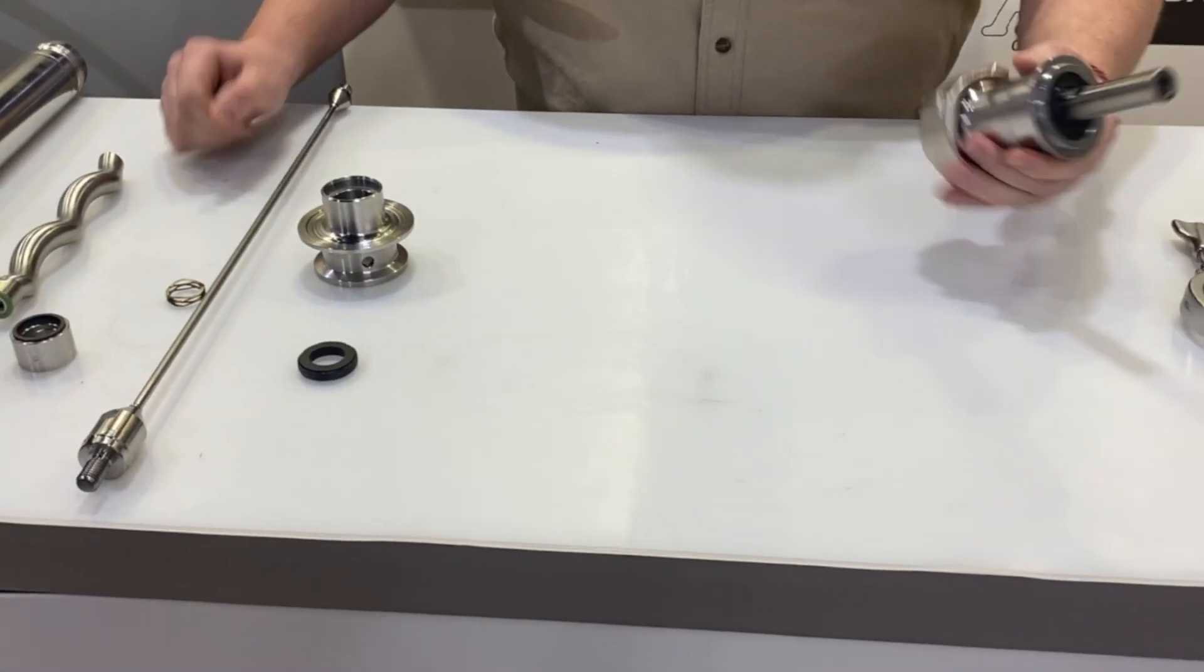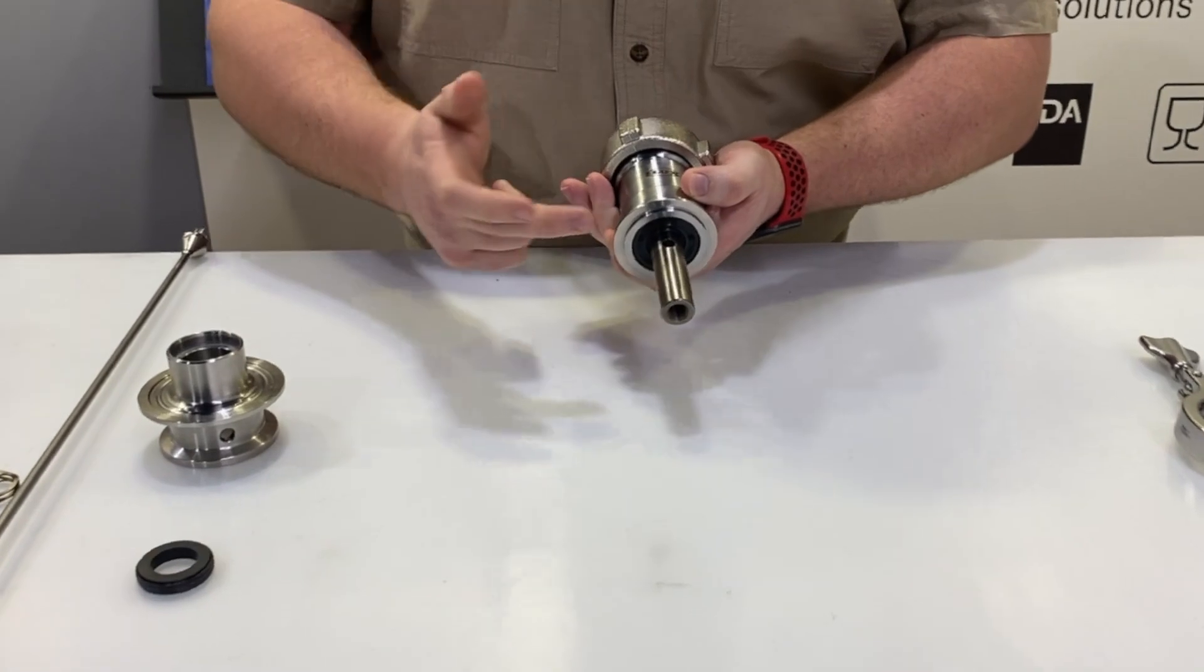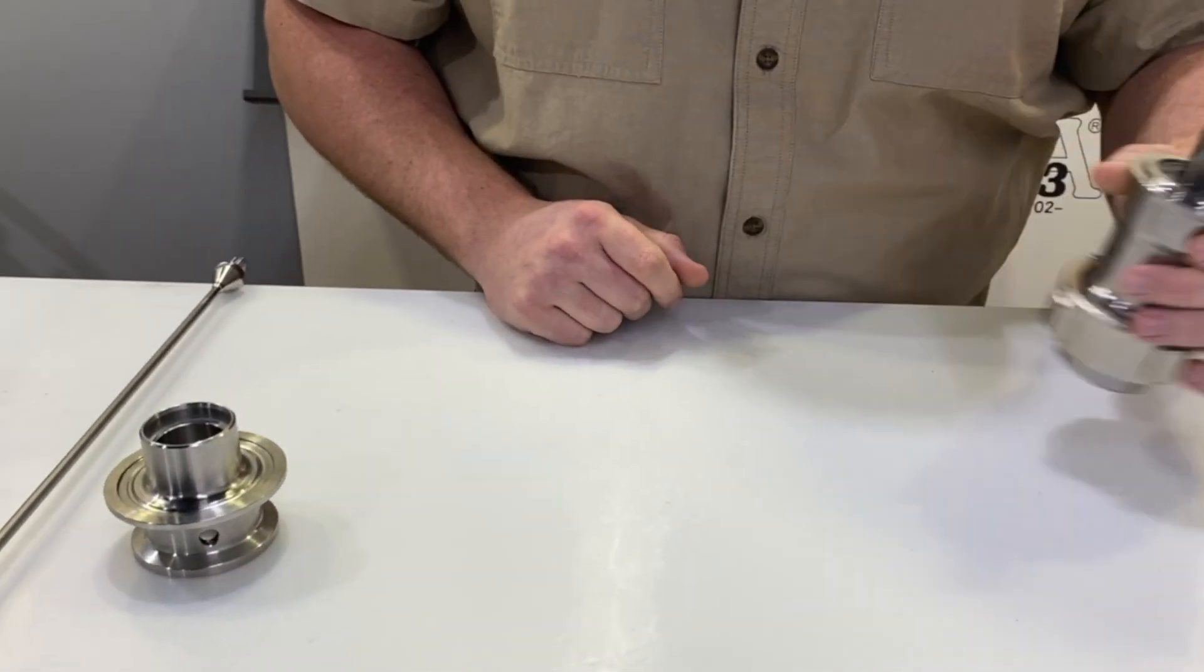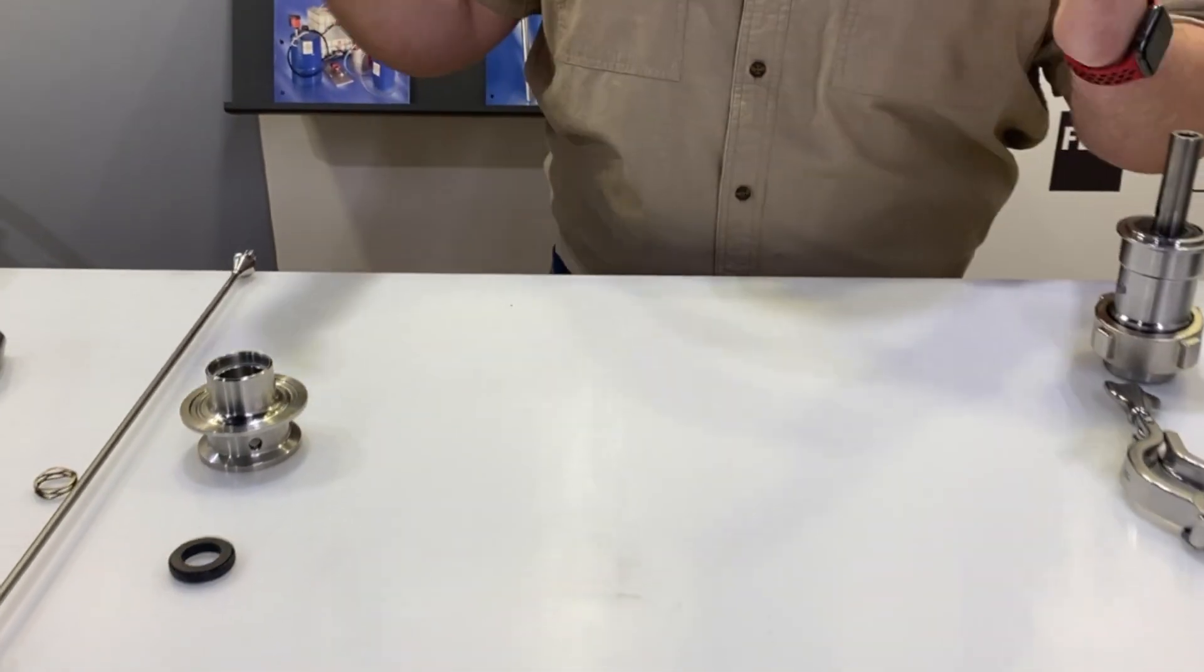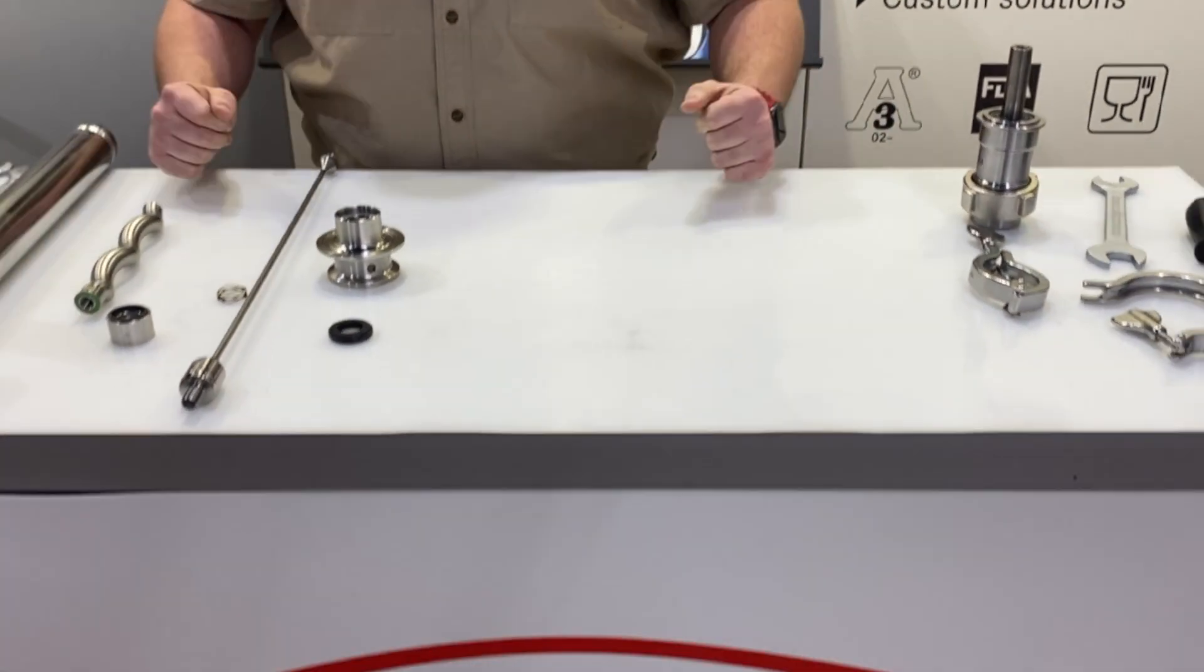And here we have our gearbox with the sight pin in the shaft. With all new parts we would begin the reassembly.